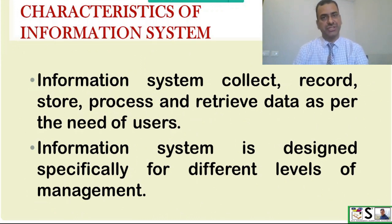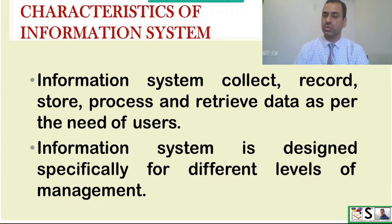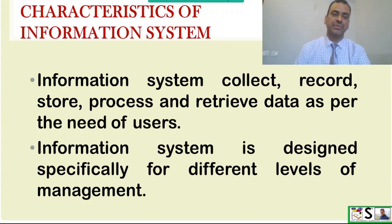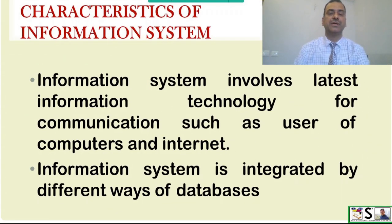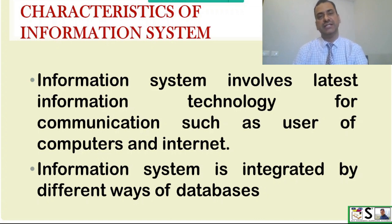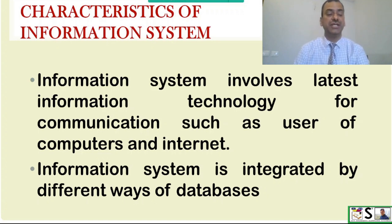An information system is a set or series of events or activities to provide processed data to individual managers at various levels of functioning areas. The term information system usually refers to the computer-based information system within the organization or department. It collects, records, stores, processes and retrieves data as per the need of the user, and is designed specifically for different levels of management. It involves the latest information technology for communication such as usage of computers, internet, emails, etc., and is integrated by different ways of database.